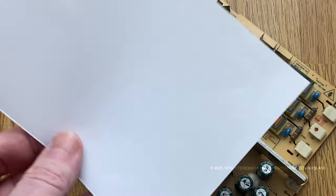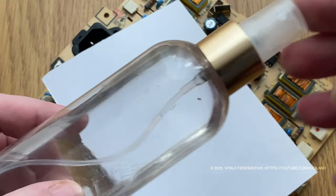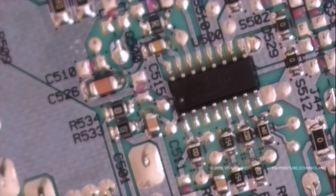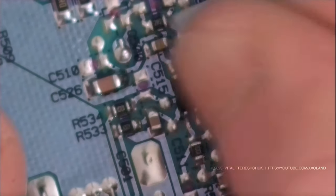One trick I use involves using coated paper and a type of thinner or alcohol. After applying the alcohol to the microchip, I use the paper to gently rub the area.